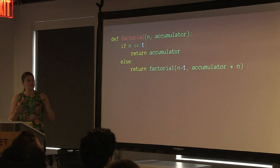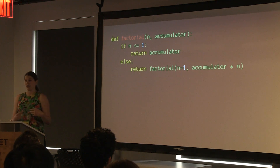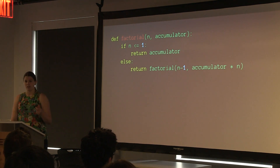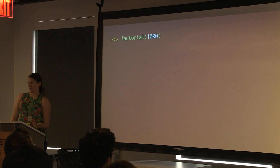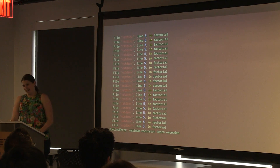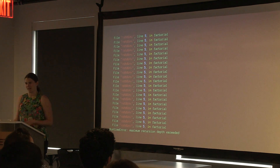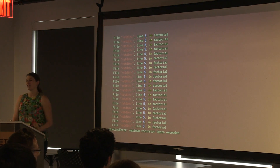We can fix this by rewriting the function to multiply as we build up the call stack instead of as we unwind it — moving the multiplication to precede the recursion. We keep an accumulated product, and when we get down to n of 1 we're done. Now the recursion is in the tail position and there's no extra work for unwinding the stack. But Python doesn't support tail call optimization — the compiler does almost exactly the same thing as before, still blowing up the entire giant call stack. We're right back where we started.